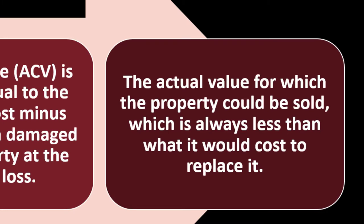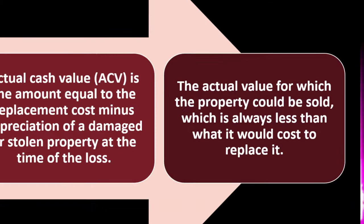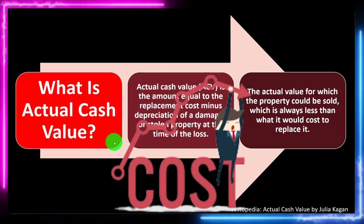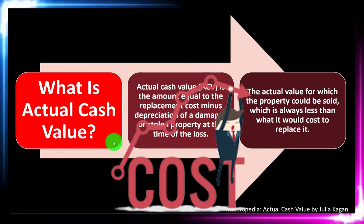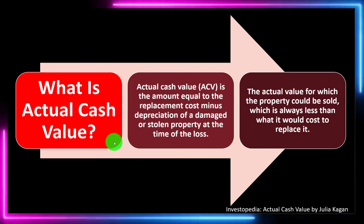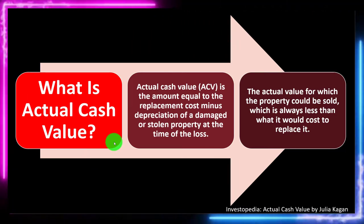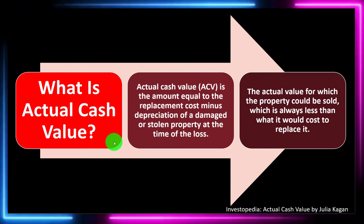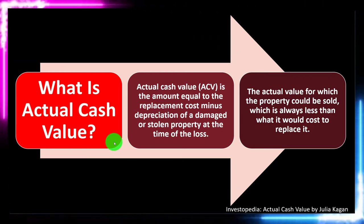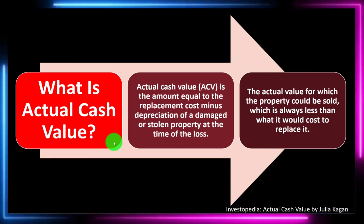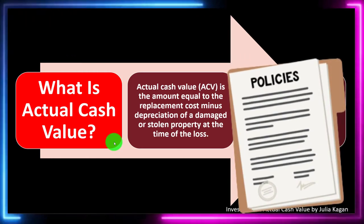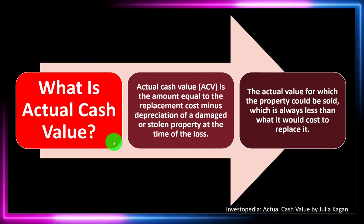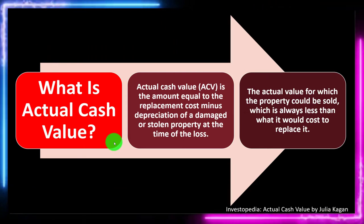The actual cash value is the actual value for which the property could be sold, which is always less than what it would cost to replace it. So if you see a policy that's going to give you the replacement cost, that would typically be a better situation — because now you're going to have enough money to replace the item. You would want the replacement cost as opposed to the cash value.